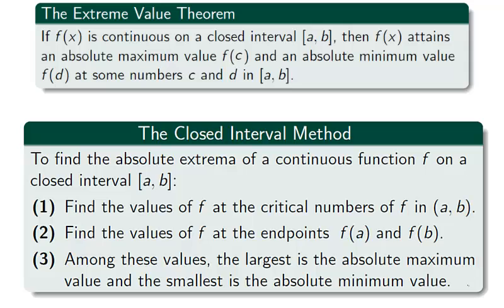Once a function is known to be continuous on a closed interval, we can find the absolute extrema using the closed interval method. To find the absolute extrema, we find all critical numbers of the function which lie in the domain, and compare their y values to the y values of the endpoints. The most extreme values among these y values are the absolute maximum and minimum values.